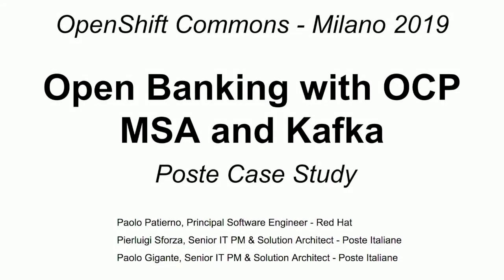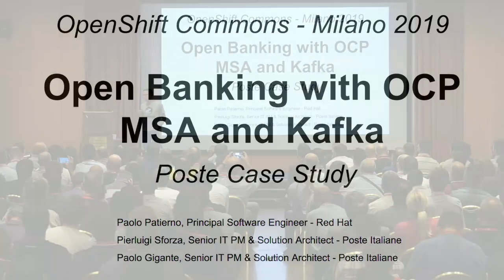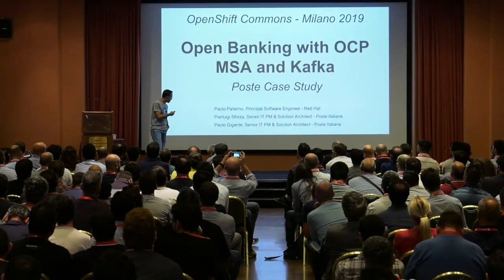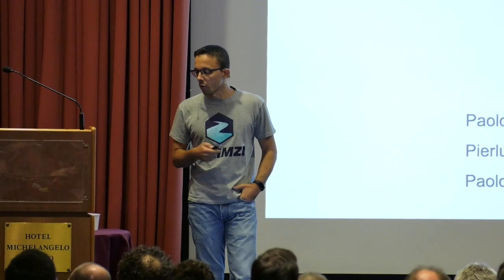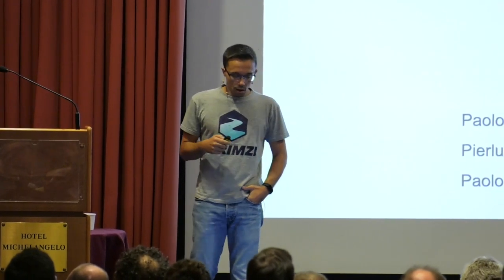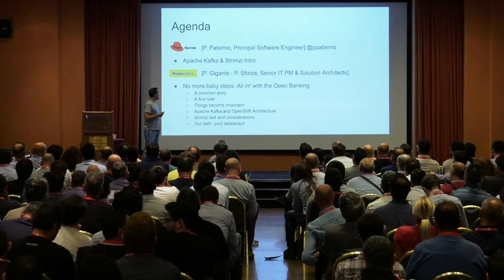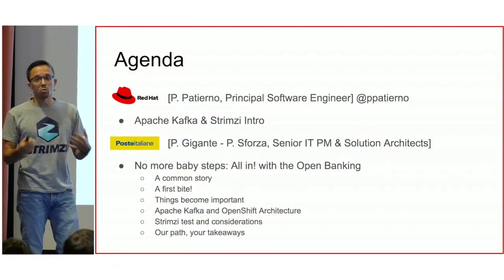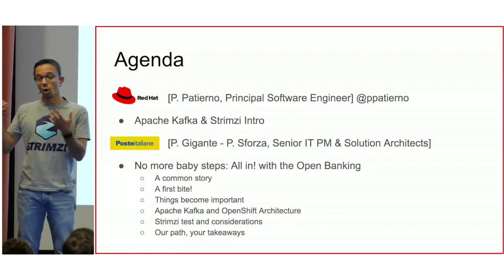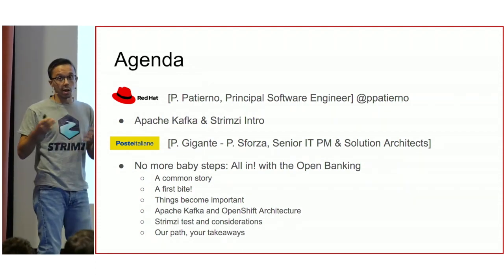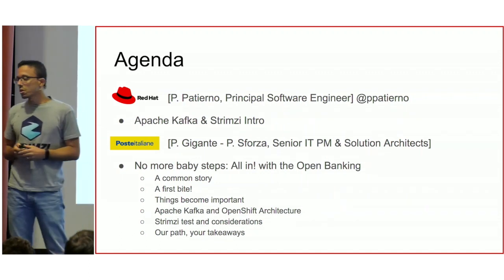Thank you all. My name is Paolo Patierno. I'm one of the engineers at Red Hat working in the messaging team, mostly on the Kafka side. I am here with Pierluigi and Paolo from Poste Italiane for showing a use case. I will give a brief introduction around Kafka and how to run Kafka workloads on Kubernetes — on OpenShift in this case — using the main project I work on, which is Strimzi.